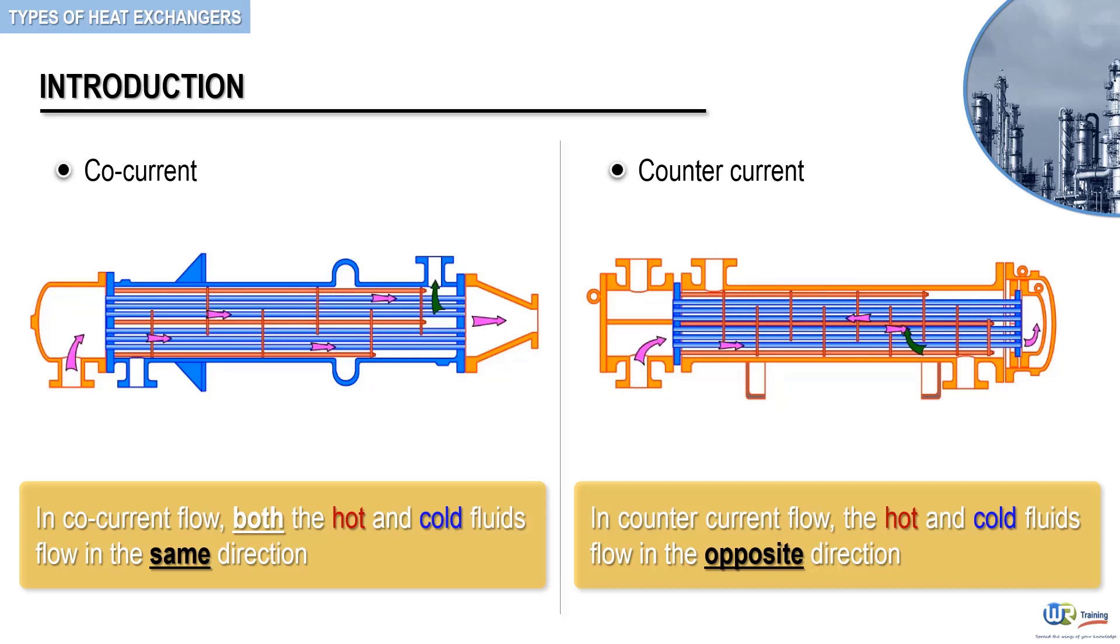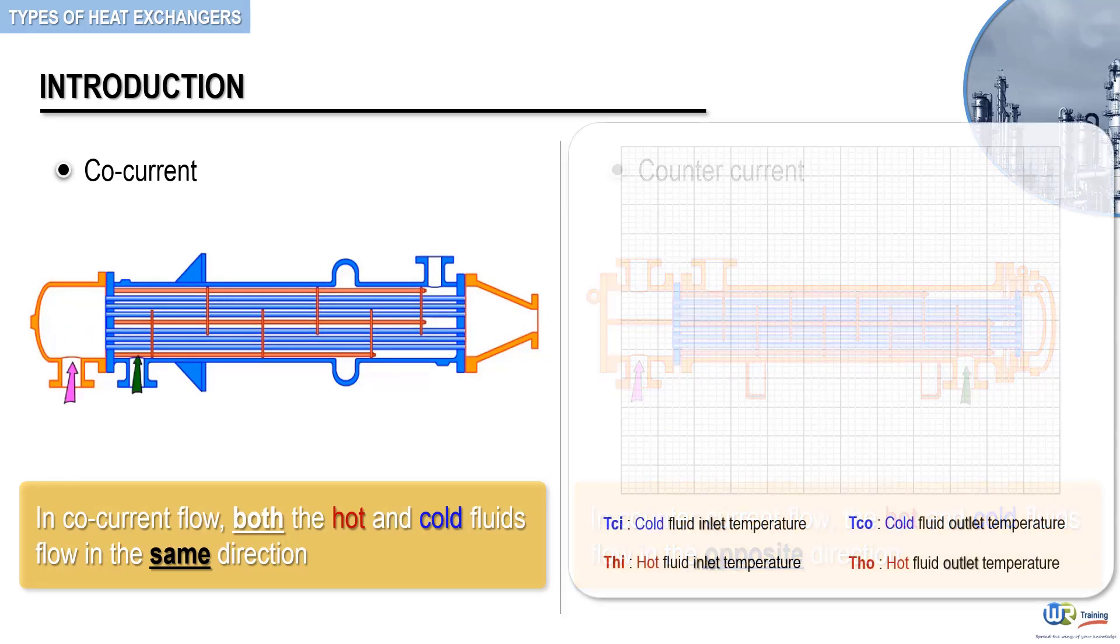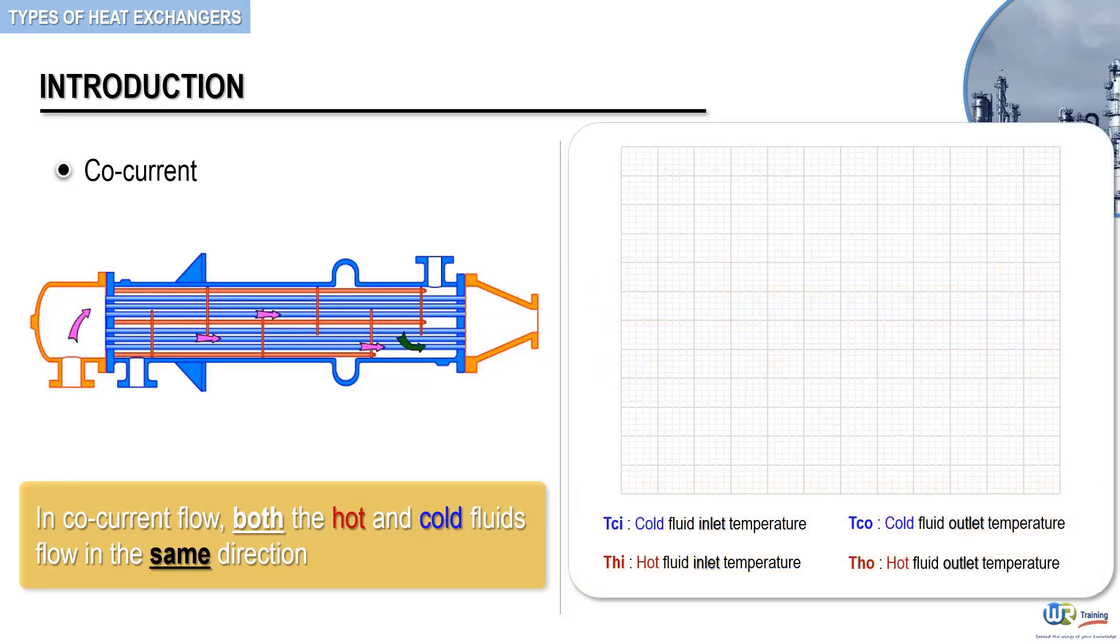Now at this stage, keep in mind that the flow of fluids through the tube and the shell results in heat exchange between them. In a co-current flow arrangement, the temperature of the cold fluid increases from Tci to Tco as the cold fluid flows through the shell.